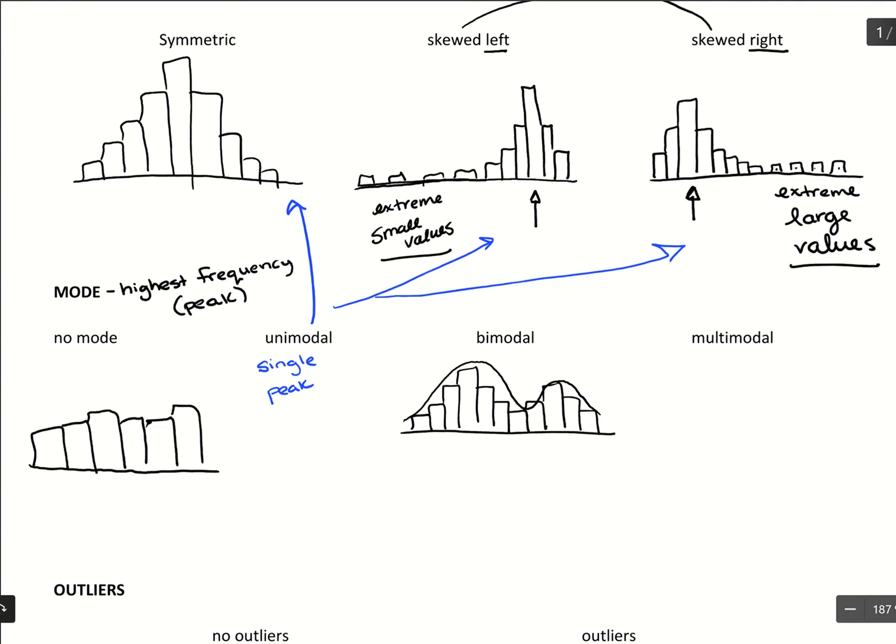Multimodal is just where you have more than one of them. So you could have a peak here, and then decrease out, something there, and then something there. So three, four, five peaks, and that would make it multimodal.